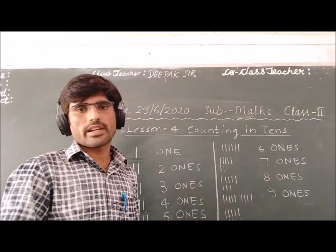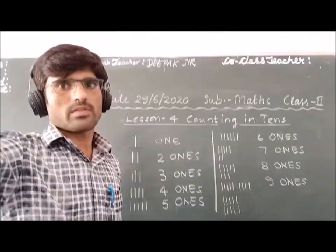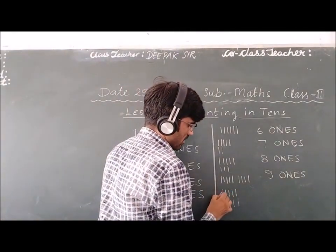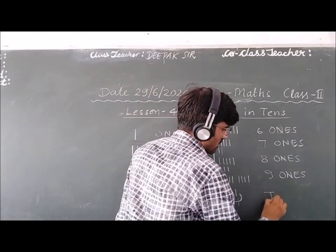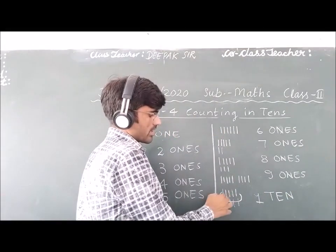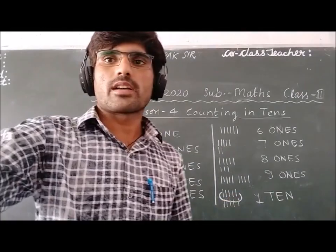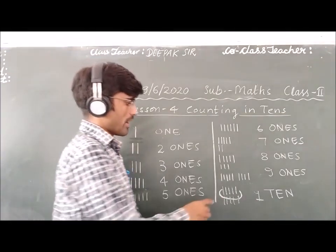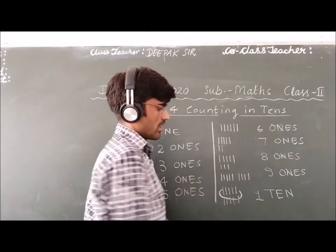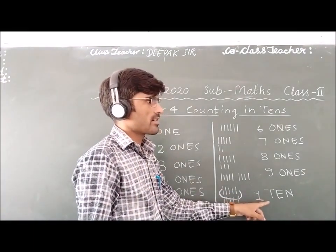So we have ten lines. Once we need to, we will read it as one ten. If you have these 10 lines, then we will read it like one ten. If we have 10 lines, then we will read it like one ten.